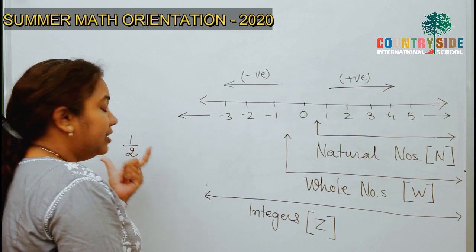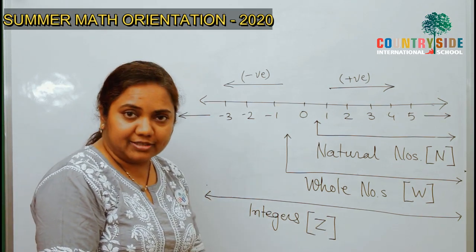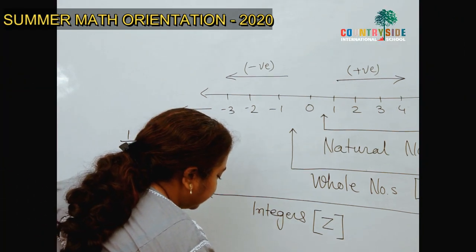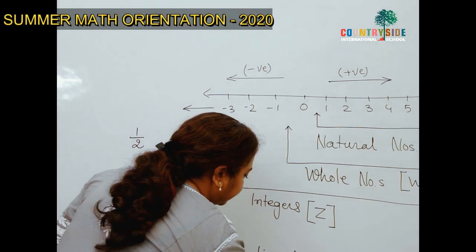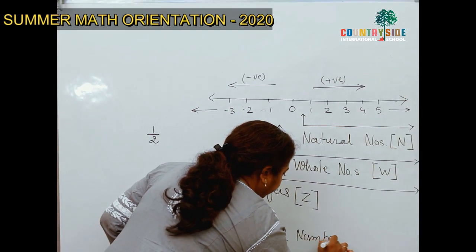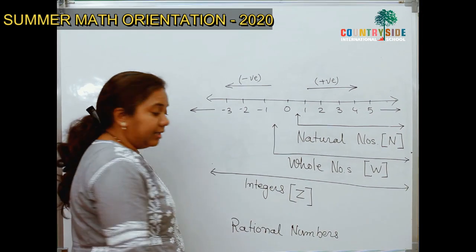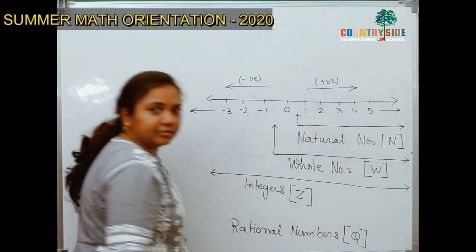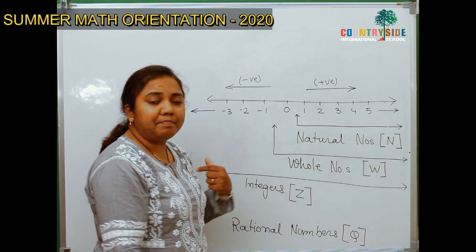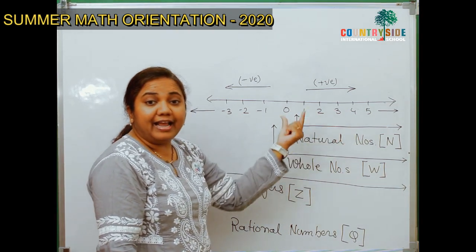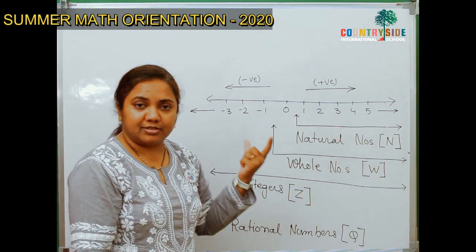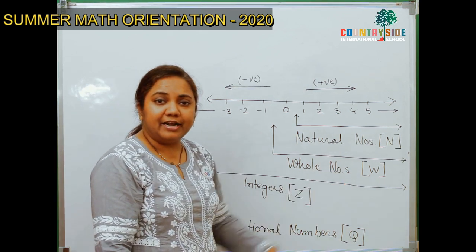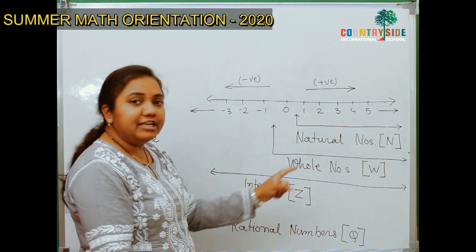So, such numbers, what we normally call fractions, are known as rational numbers. They are denoted by Q. And, they are represented in between any two integers. Repeating again. Rational numbers are represented between any two integers.